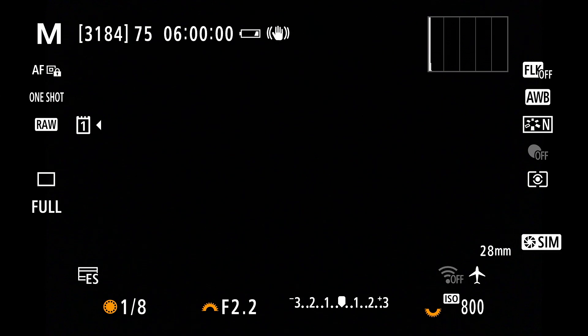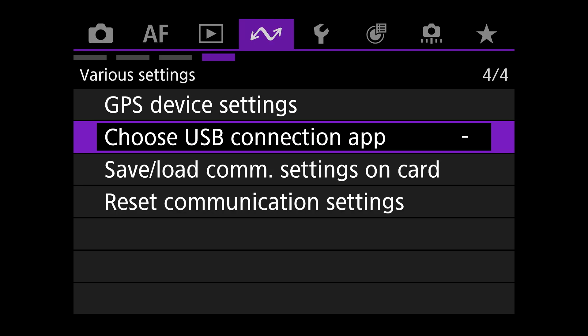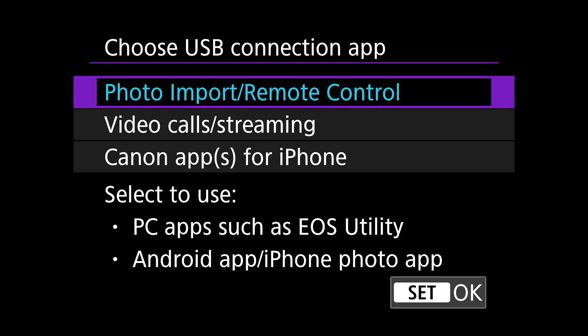Now, with that said, let's talk a little bit about how all of this works on Canon's cameras in terms of downloading your images. First, if you are using an EOS R1, R3, R5 Mark II, R6 Mark II, R7, R8, or R10, before you plug your camera into your computer, you will need to find the choose USB connection app setting in the menus and make sure that it is set to the photo import slash remote control option. On the R5 Mark II, you will find this on the various settings page or page four of four in the purple network menu. On the other cameras I've listed, you will find this in the setup section somewhere, usually on page four or five depending on the camera.